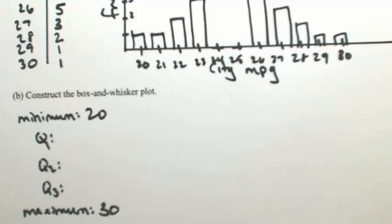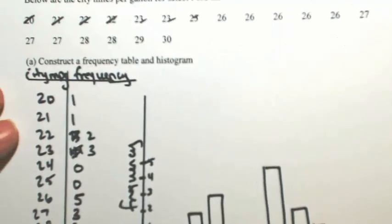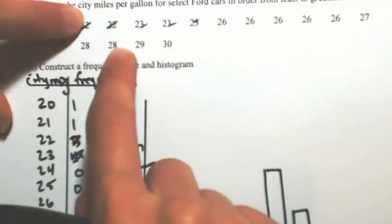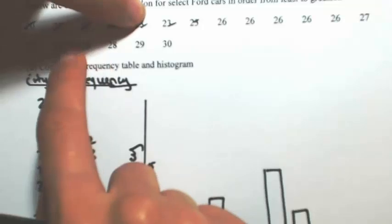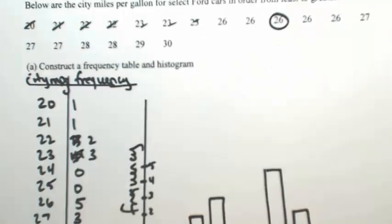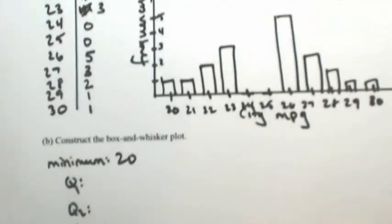Q2 separates the bottom 50 from top 50, so that's just the median. We're going to find the median of these numbers. I'm just going to start on the ends and work my way in. Right at 26, that's our median.